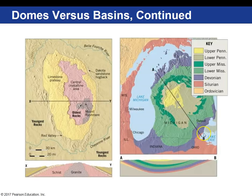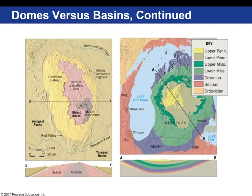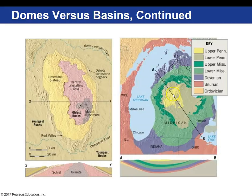Michigan is a good example of a basin. In this case, A to B is shown in cross section. Looking at the key, it shows that yellow is younger compared to Ordovician, and in a basin the youngest rocks are in the center. When you have a geologic map, you can recognize a dome by the circular pattern exhibited on the map. You also recognize a basin by a circular pattern — it is just whether the rock is older or younger in the center that determines if it is a dome or a basin.